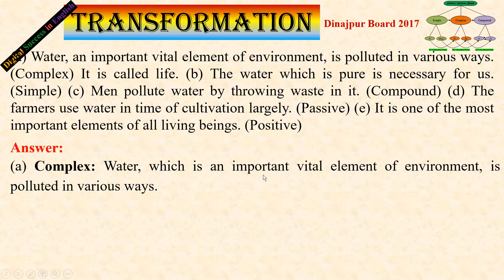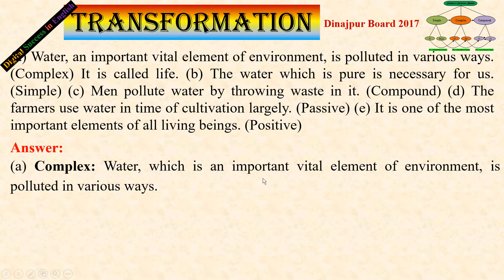Water, which is an important vital element of the environment, is polluted in various ways. Water is polluted in various ways — this is the main clause, and 'which is an important vital element of the environment' is the dependent clause. So IC and DC — this is the complex sentence.